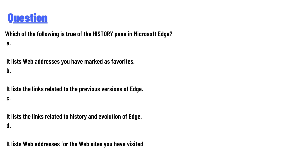A — it lists web addresses you have marked as favorites. B — it lists the links related to the previous version of Edge. C — it lists the links related to history and evolution of Edge. D —